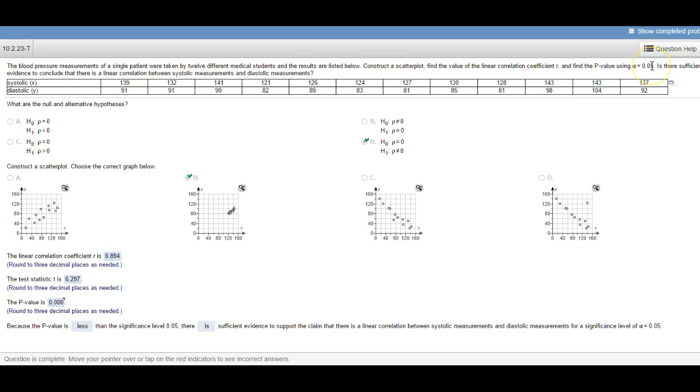The smaller alpha is, the more significant the test. So alpha equals 0.05, that's kind of a standard value for alpha. Because the p-value is less than 0.05, there is evidence to support the claim there's a linear correlation. But anyway, that's where the p-value comes from, it comes from running the linear regression t-test.